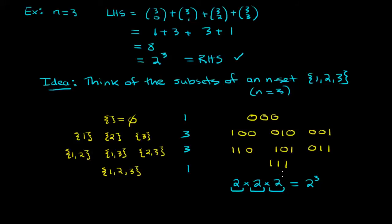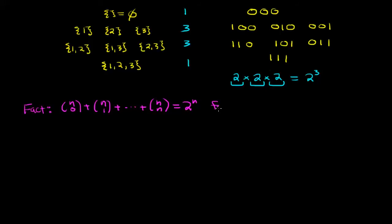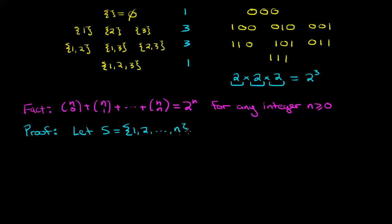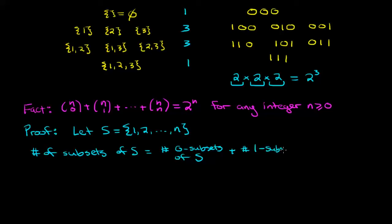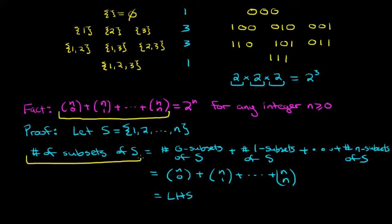This correspondence is exactly the idea of the general proof — all we have to do is write it down in terms of a general n instead of n equals three. Let s be the set {1, 2, ..., n}. The number of subsets of s equals the number of zero-subsets plus the number of one-subsets, and so on up to the number of n-subsets, which equals n choose zero plus n choose one, continuing to n choose n — the left-hand side. So the left-hand side is counting the total number of subsets of s.